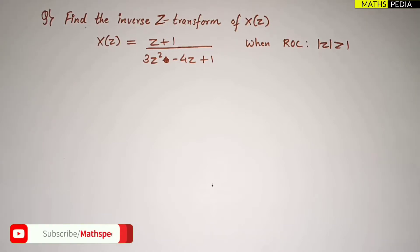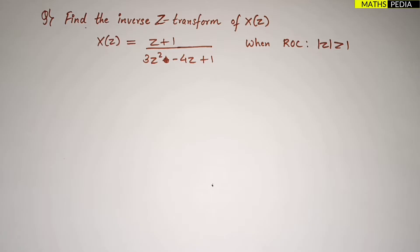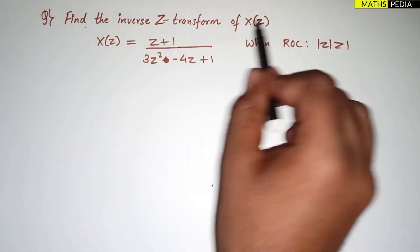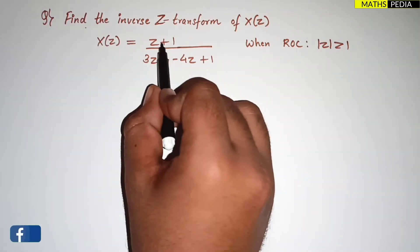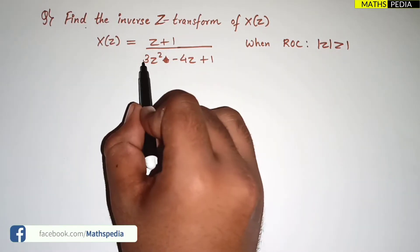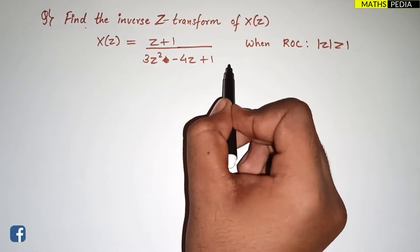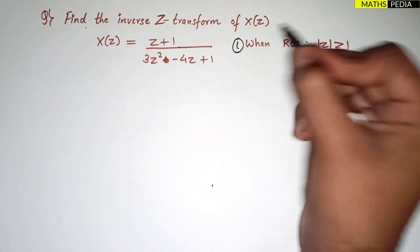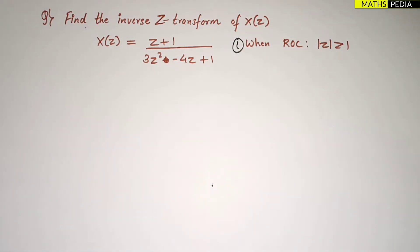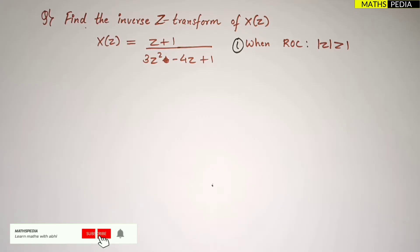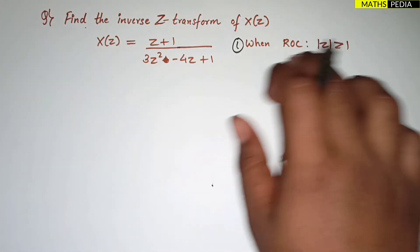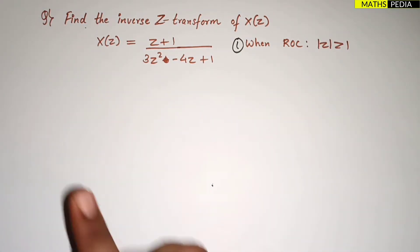In this video, we are going to solve a problem based on inverse Z-transform using partial fractions. The question is: find the inverse Z-transform of X(z) = (z + 1) / (3z² - 4z + 1), with the condition that the ROC is |z| > 1. We will follow the normal procedure and at the end find the result for this ROC.